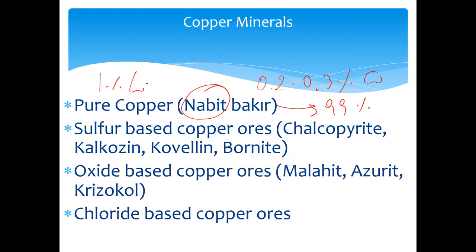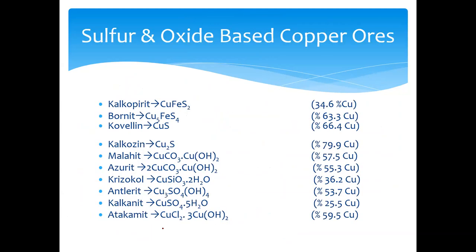Sulfur-based ores include chalcopyrite, chalcocite, covellite, and bornite. Oxide-based ores include malachite, azurite, and others. There are also carbonate-based copper ores. Remember — more than 200 minerals exist, but only four copper ores account for the majority. Chalcopyrite is the most frequently used copper mineral or ore, containing 34.6% copper. Bornite (Cu₅FeS₄) contains 63.3% copper. Covellite (CuS) contains about 79.9% copper. Malachite contains about 57.4% copper. The copper content changes depending on the copper ore.